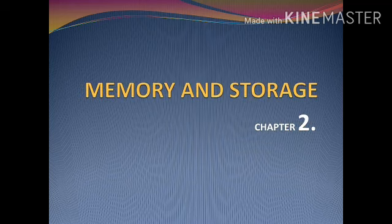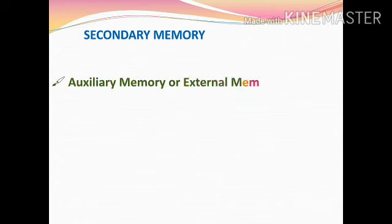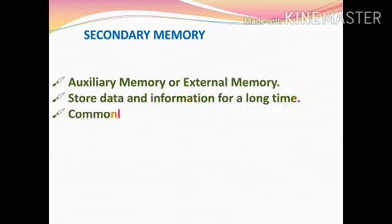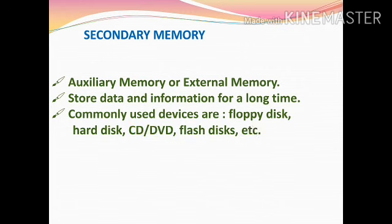Let us continue our second chapter: memory and storage. Secondary memory is also known as auxiliary memory or external memory. It is not located inside the CPU. They are used to store data and information for a long time. In secondary memory, information remains stored till the user erases it.